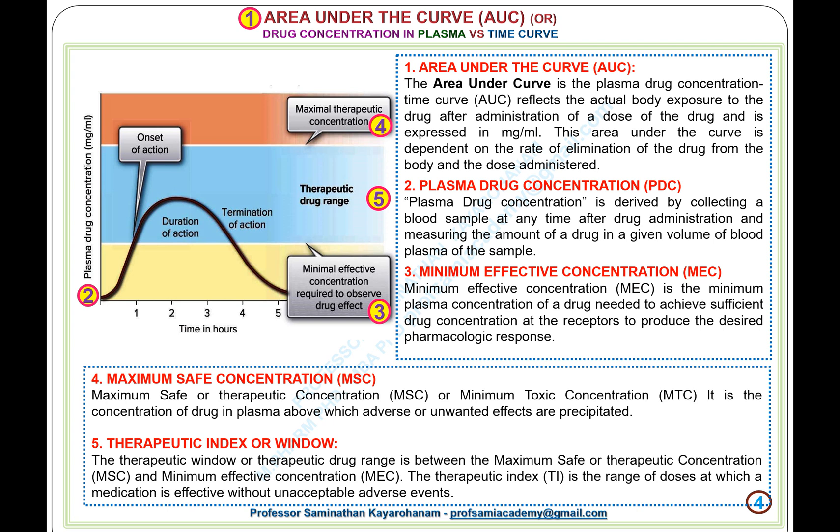4. Maximum Safe Concentration (MSC), also called Minimum Toxic Concentration (MTC): the concentration of drug in plasma above which adverse or unwanted effects are precipitated. 5. Therapeutic Index or Window: the therapeutic window ranges between the Maximum Safe Concentration (MSC) and Minimum Effective Concentration (MEC). The therapeutic index (TI) is the range of doses at which a medication is effective without unacceptable adverse events.